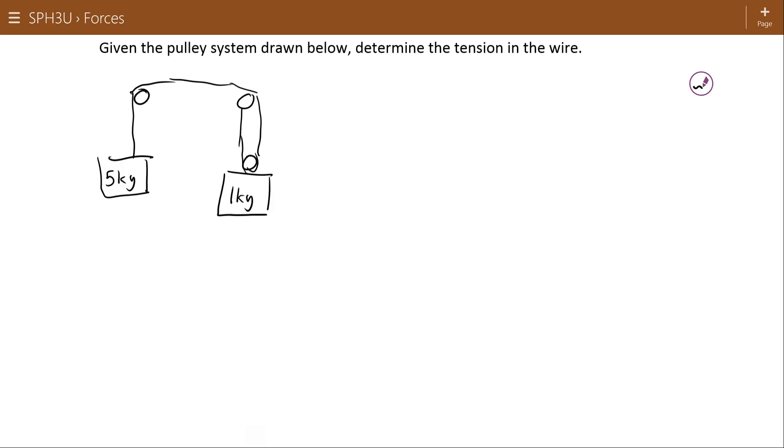What we have here is a pulley system with a 5 kilogram mass and a 1 kilogram mass where the string passes over the pulley and comes back up and attaches to the top. So here you have two strings with the tension T pulling up on the 1 kilogram mass and only one string or one tension pulling up on the 5 kilogram mass.